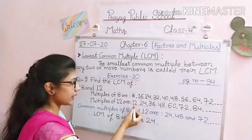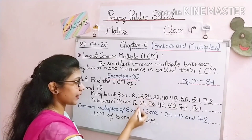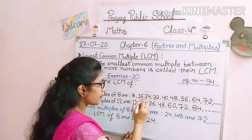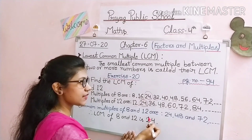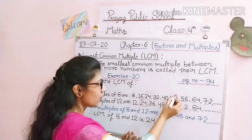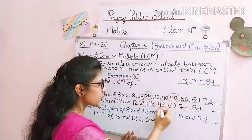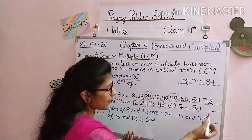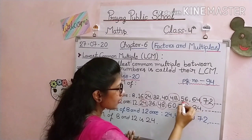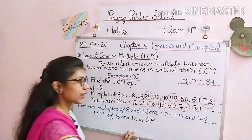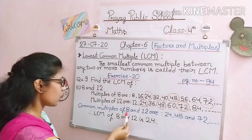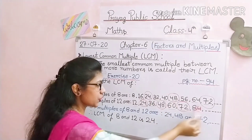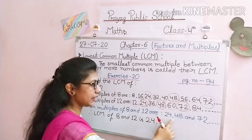8 is only a multiple of 8, not of 12. 12 is only a multiple of 12. Checking this way, we find that 24 is a multiple of both 8 and 12 — we circle it so it's easy to spot. Next, 48 is also a multiple of both 8 and 12. And 72 is also a multiple of both 8 and 12. So the common multiples of 8 and 12 are 24, 48, and 72. We write each common number only once.